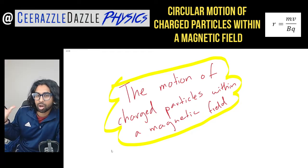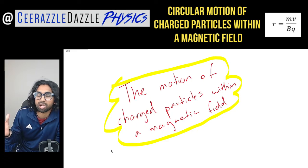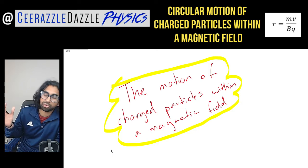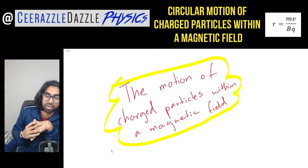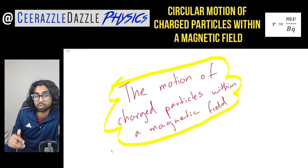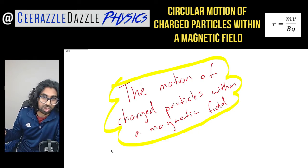Hey everyone, welcome to another session of Surraswell Downswell Physics. In today's session we're going to be talking about the motion of charged particles within a magnetic field. Before we get going, make sure you hit the like and subscribe button. Before you've watched this video, make sure you watch my previous video in which we proved the formula that the force on a single charged particle F is equal to BQV, otherwise it just won't make sense.